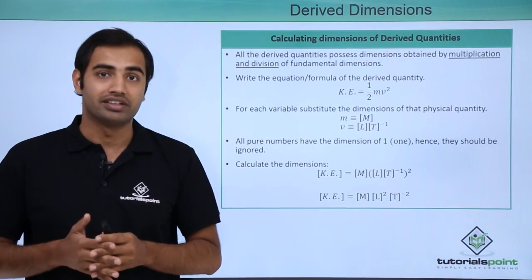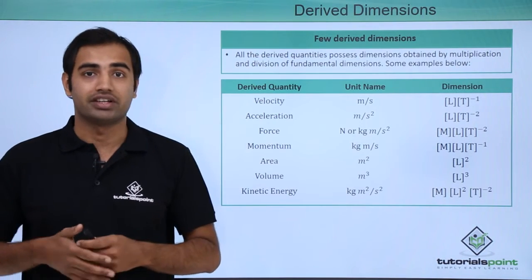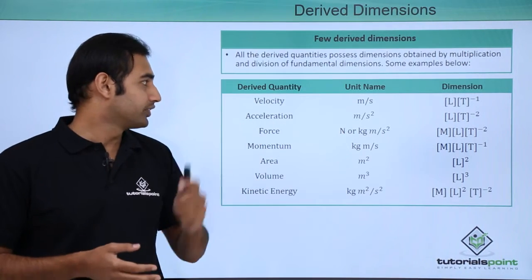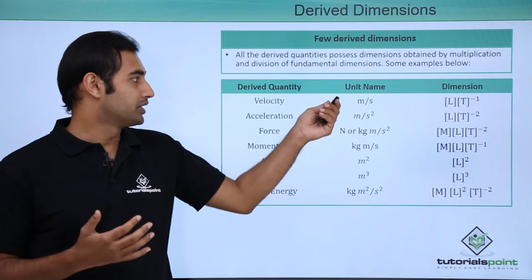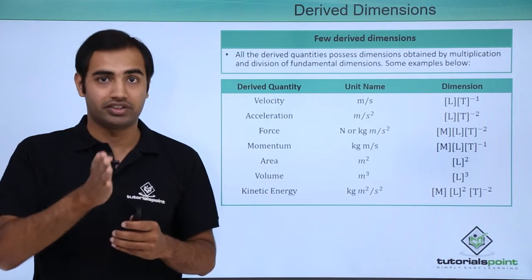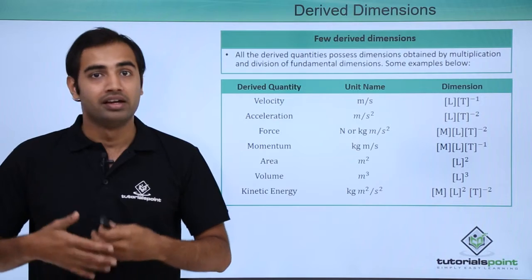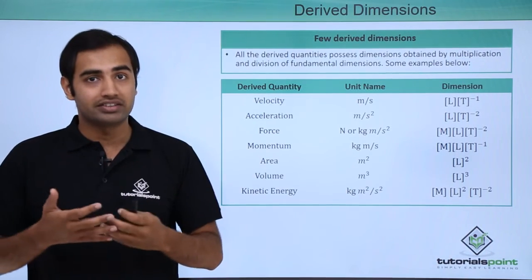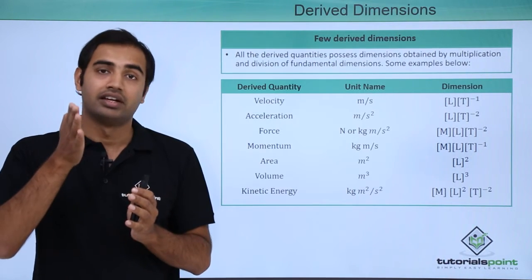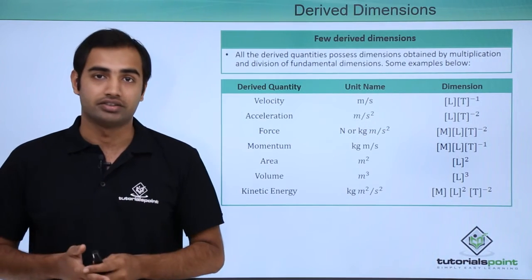Now let's look at some derived quantities and their calculated dimensions. For velocity, the unit is simply meter per second — meter represents length and second represents time — so the dimension is simply LT raised to the power minus 1. Next, acceleration has the unit meter per second squared — meter is the representation of length and second of time — so the dimension is LT raised to the power minus 2.